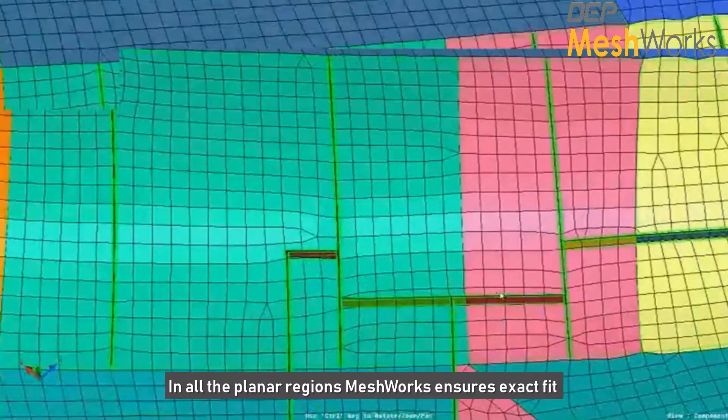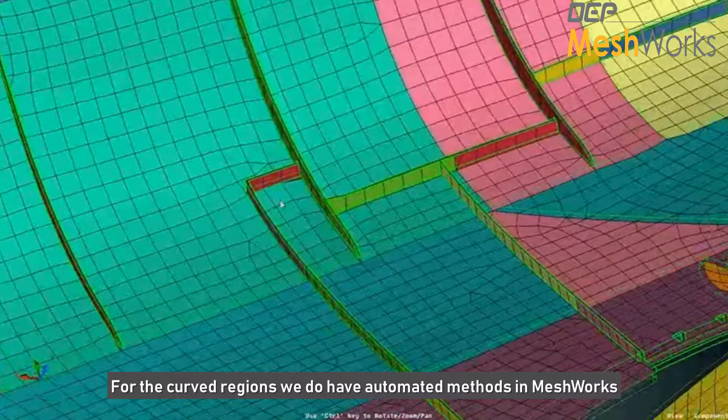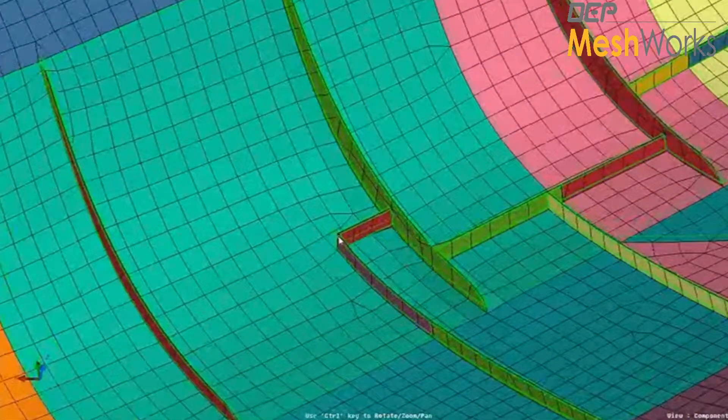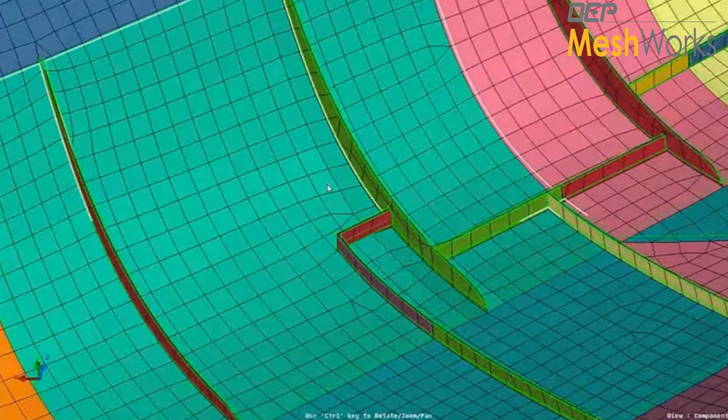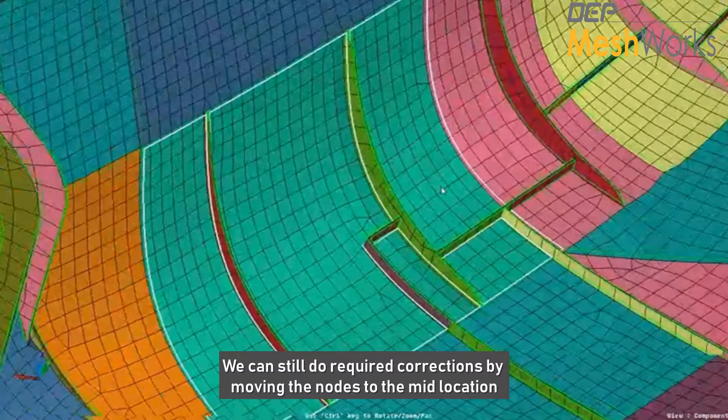In all the planar regions, Meshworks typically makes sure that 100% it is on the plane, but for the curved regions we do have an automatic method. But even after this automatic method, if we are not able to correct it, the user has an option to move all these nodes to the mid location.